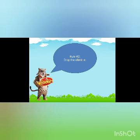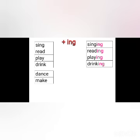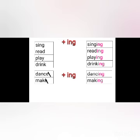Rule number two: drop the silent E. Bye-bye, E! For dance and make, we subtract one E. So dance plus ING equals dancing, and make plus ING equals making.